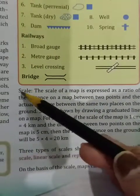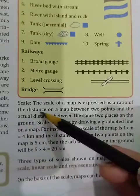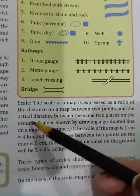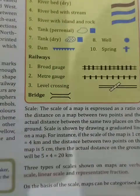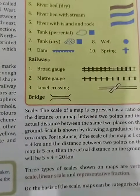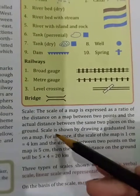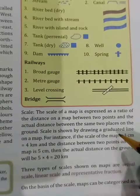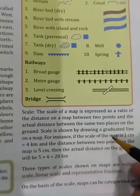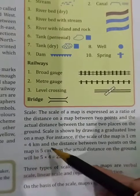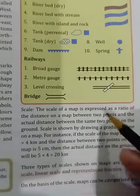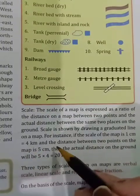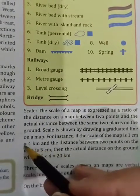The next element is scale. The scale of a map is expressed as a ratio of the distance on a map between two points and the actual distance between the same two places on the ground. For instance, if the scale of a map is 1 cm equal to 4 km, and the distance between two points is 5 cm, then the actual distance is 5 × 4 = 20 km.